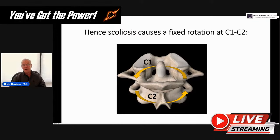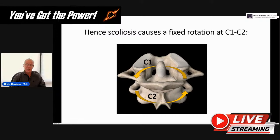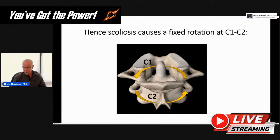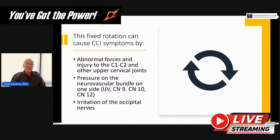Scoliosis causes a fixed rotation at C1-C2. If you've got scoliosis or side bending below that, you're getting rotation of C2 relative to C1. You can also have problems at the upper cervical spine that give bad proprioceptive information causing scoliosis, but you can also get scoliosis that leads to C1-C2 rotation. This fixed rotation causes abnormal forces at C1-C2 and the upper cervical joints, and can lead to pressure on the neurovascular bundle — the internal jugular vein, cranial nerves 9, 10 (vagus), 12 — and irritation of the occipital nerves.